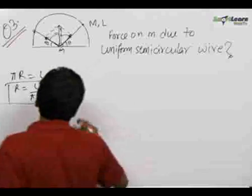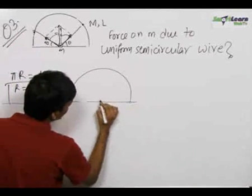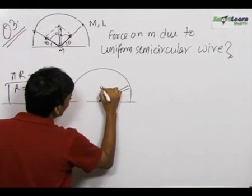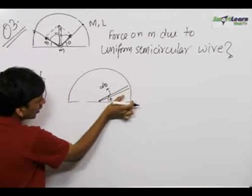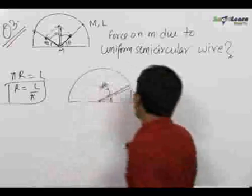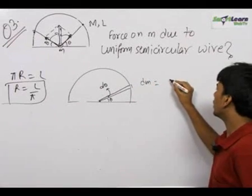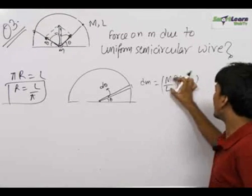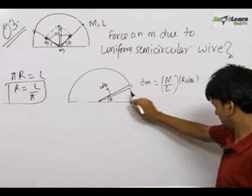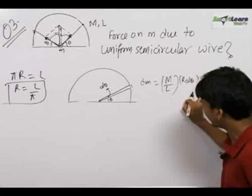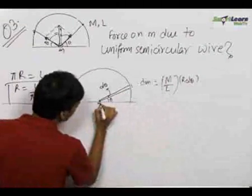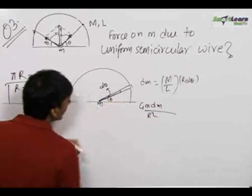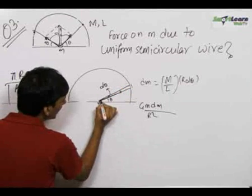Now we perform that integration. As we do whenever we have to consider a small element, we take a small element subtending an angle dθ at angle θ. The location of this element is at angle θ and it subtends an angle dθ. The small mass dm of this element equals mass per unit length, that is m/l, multiplied by r dθ — the length of this element. Mass per unit length times the length of the element gives us the mass of this element: dm = (m r / l) dθ.